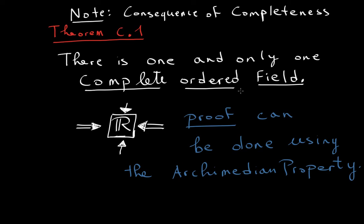Okay, so this theorem tells us that just as any number system obeying Peano's axioms is really the natural numbers, any complete ordered field is really the reals.